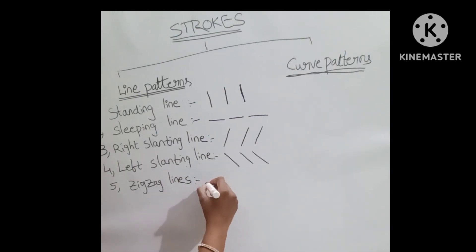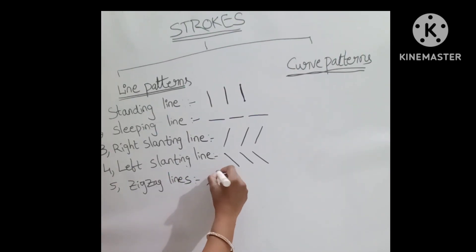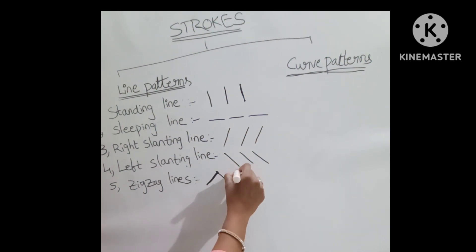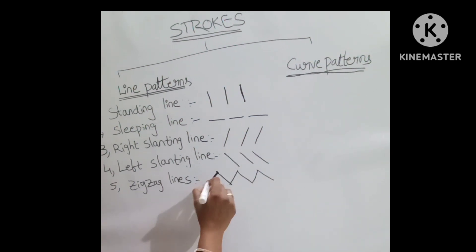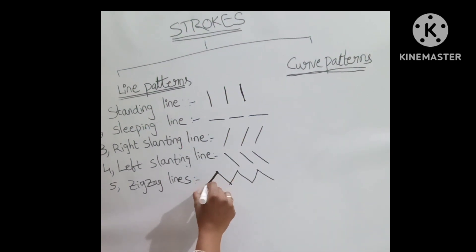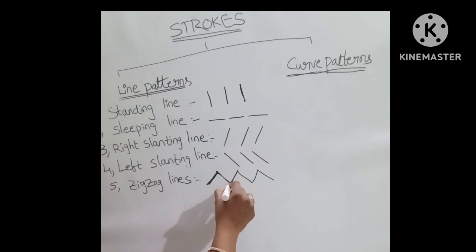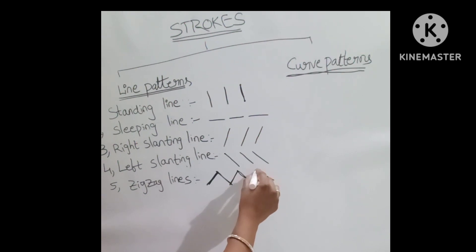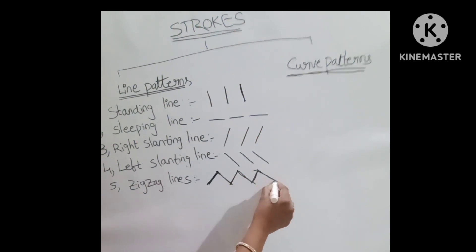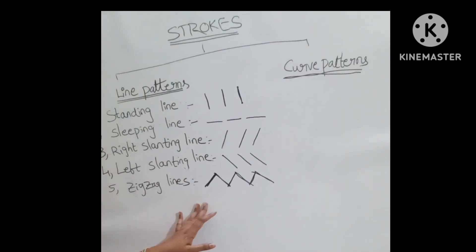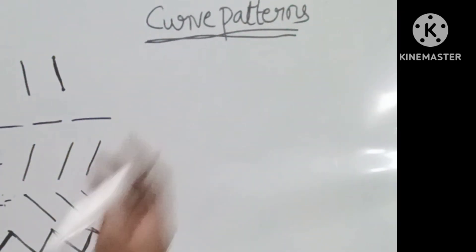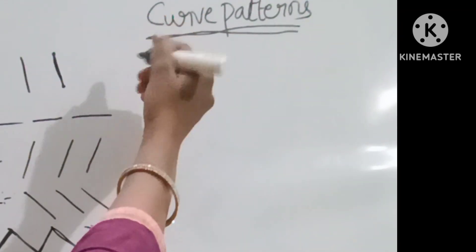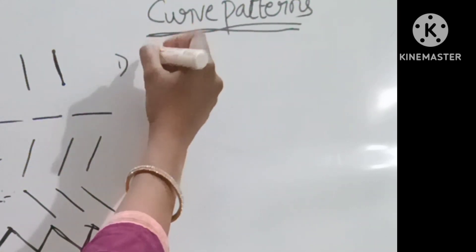Zigzag lines: right slanting line, left slanting line, right slanting line, left slanting line — these are the zigzag lines. Curve patterns are five types.